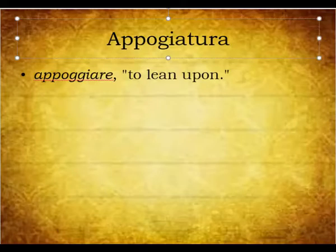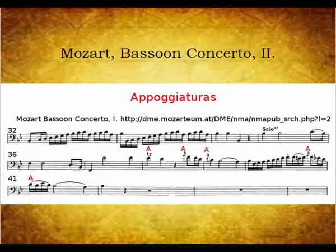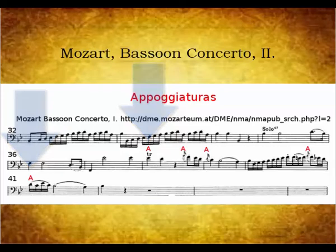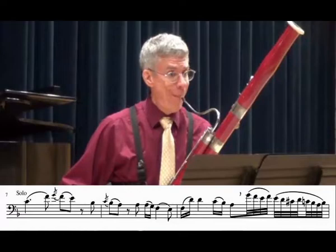Let's examine some examples from the concerto and then see how the appoggiaturas signal appropriate musical phrasing. The opening solo in the first movement features several appoggiaturas. Here I have indicated them with red A's above the notes. The most important stresses or leanings occur on the downbeats of measures 38 and 41. These moments are the climaxes of the phrases, and they should be the result of musical shaping leading up to them. Likewise, appoggiaturas are featured often in the second movement. Each of them should be slightly stressed.